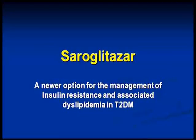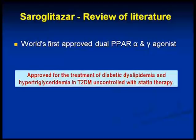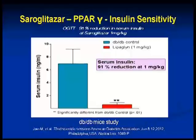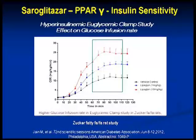Can we use saruglitazar as a newer option for management of insulin resistance in association with dyslipidemia in type 2 diabetes? Yes — after review of the literature, it has been approved for treatment of diabetic dyslipidemia and hypertriglyceridemia. It can be used for primary hypertriglyceridemia only off-label. There is a 91% reduction in insulin resistance at 1 mg/kg, and even with the hyperinsulinemic euglycemic clamp study — the gold standard — there is an improvement in insulin resistance.